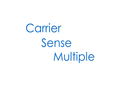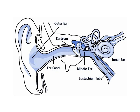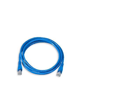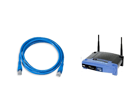CSMA stands for Carrier Sense Multiple Access, and is essentially an ear that listens for network traffic on a transmission medium, usually an Ethernet or wireless connection. It is this transmission medium that determines the method used to minimize collision on a network.